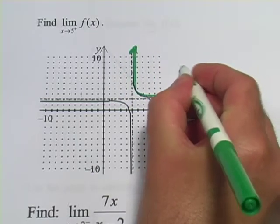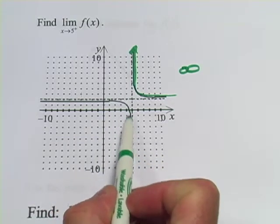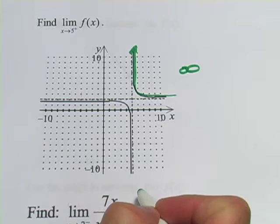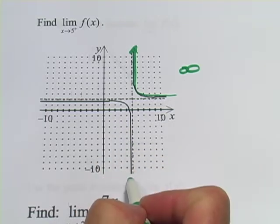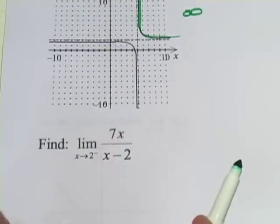If we were to find the limit approaching this one from the negative side of the graph, or from the left, the answer would be negative infinity, because here that branch of the function goes down to negative infinity.